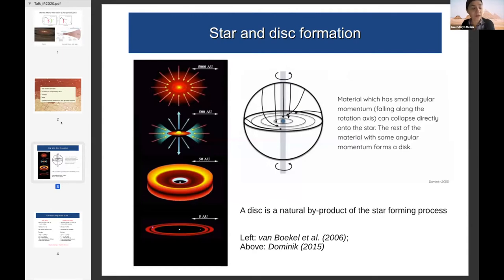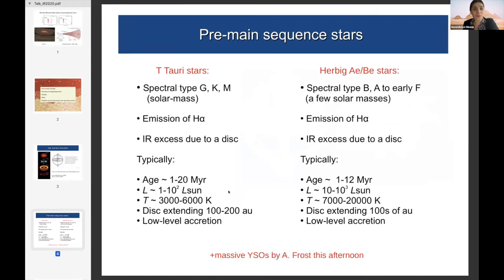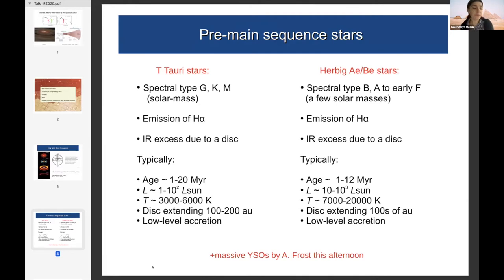The disc, which is initially very gas-rich and has only one percent in mass of dust, will in the end become gas-poor and only a debris disc is left. I'm going to talk about the stage where the disc is rich in gas and dust, but I will only talk about dust — not gas. Gas will be covered this afternoon by Colette Salyk.